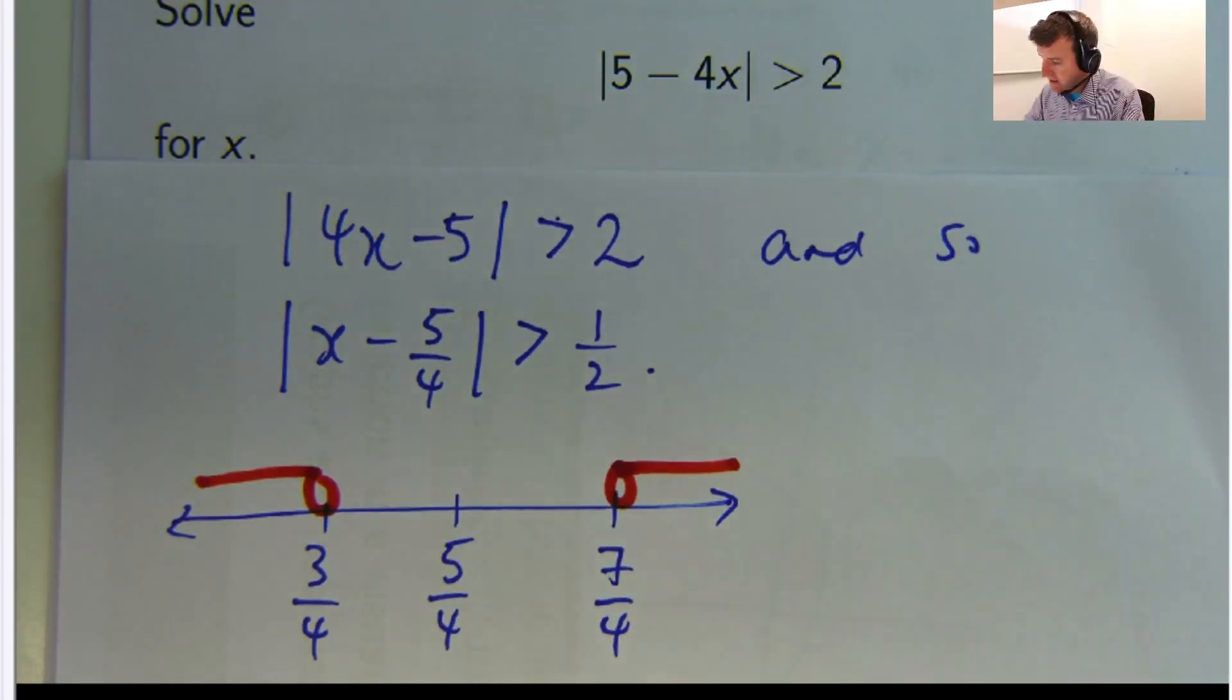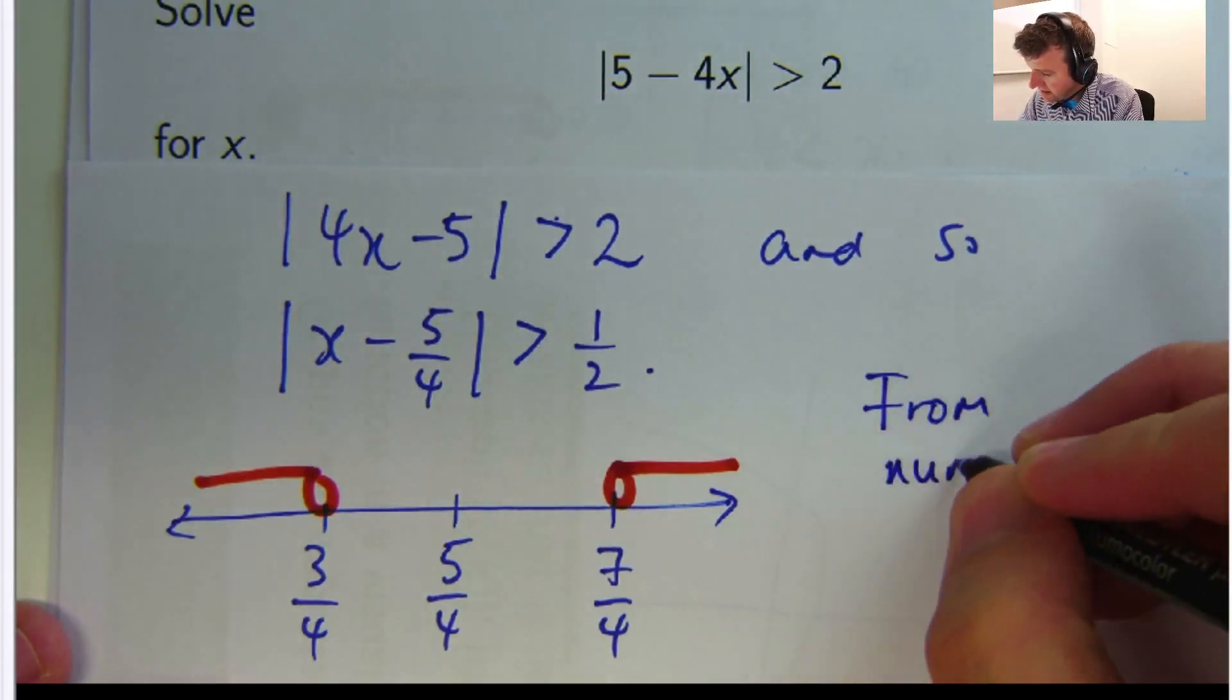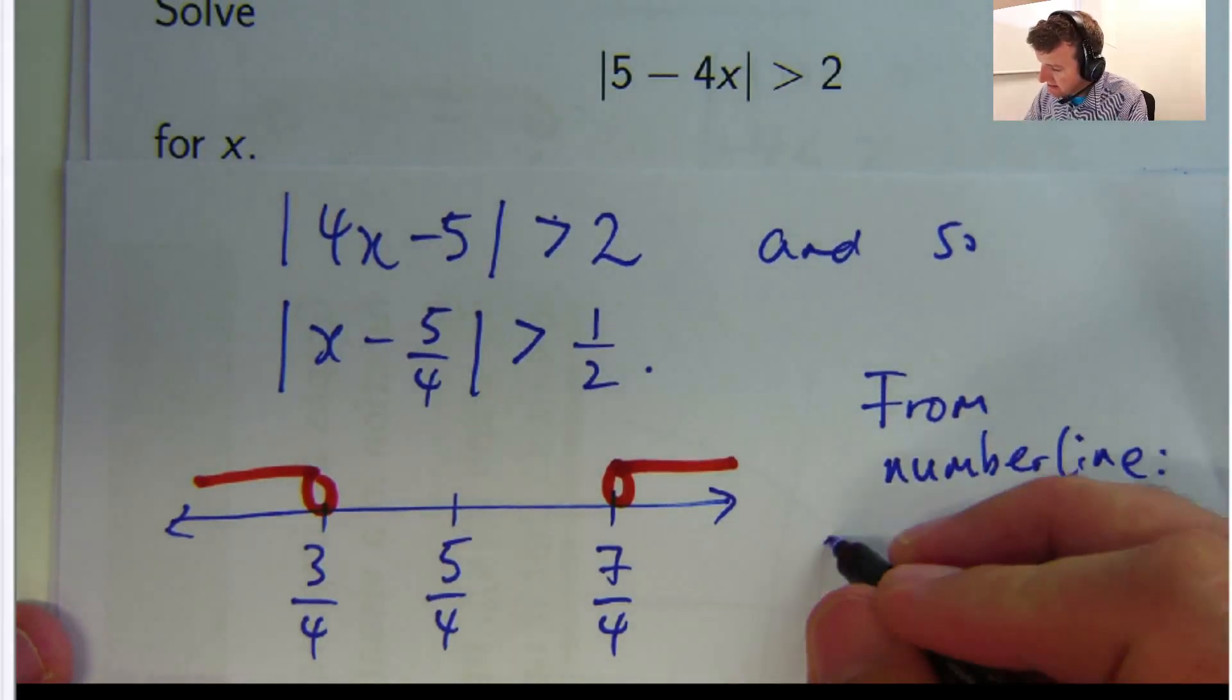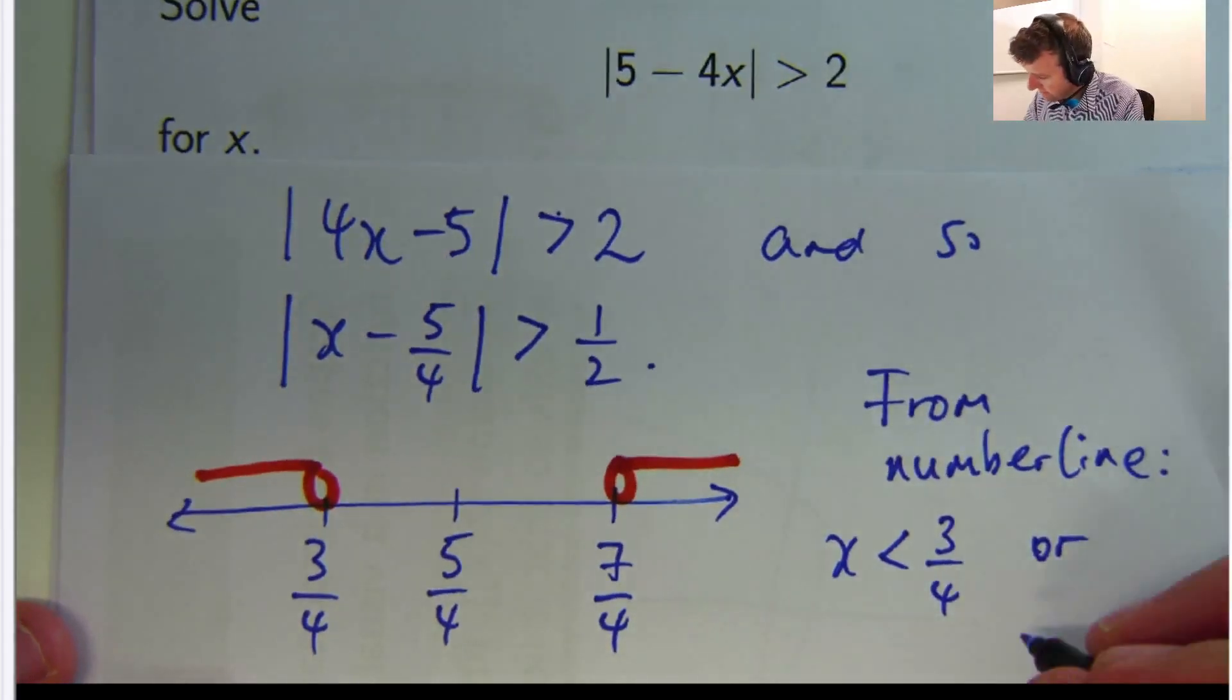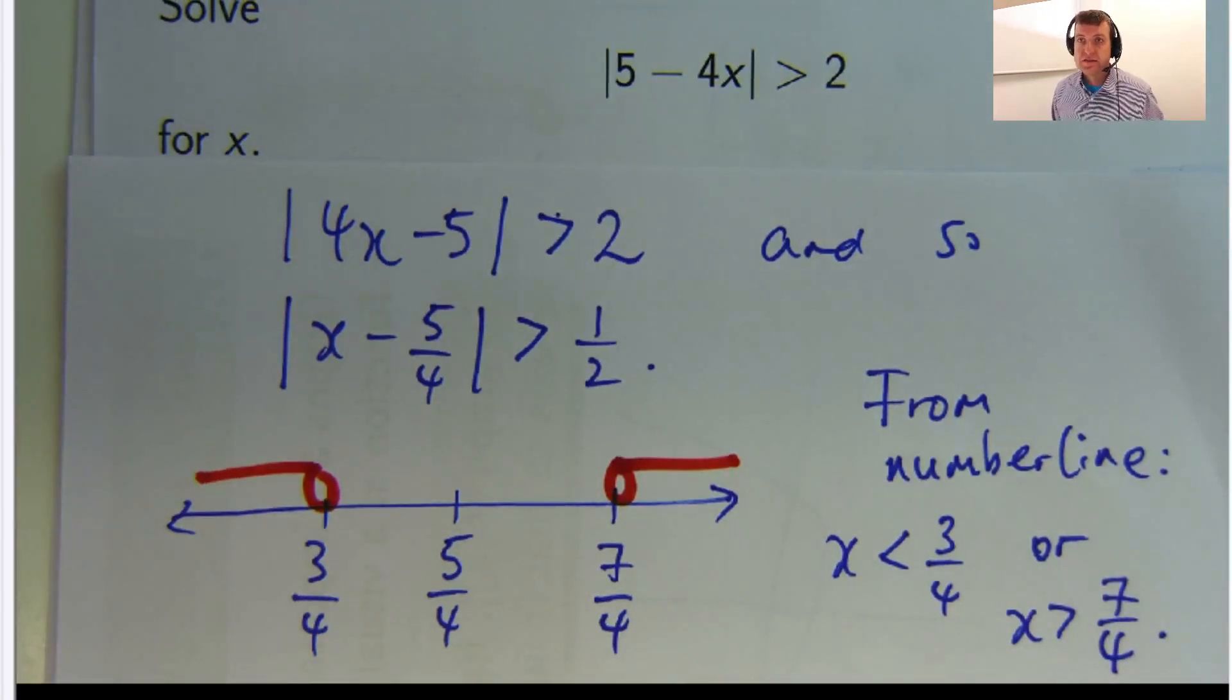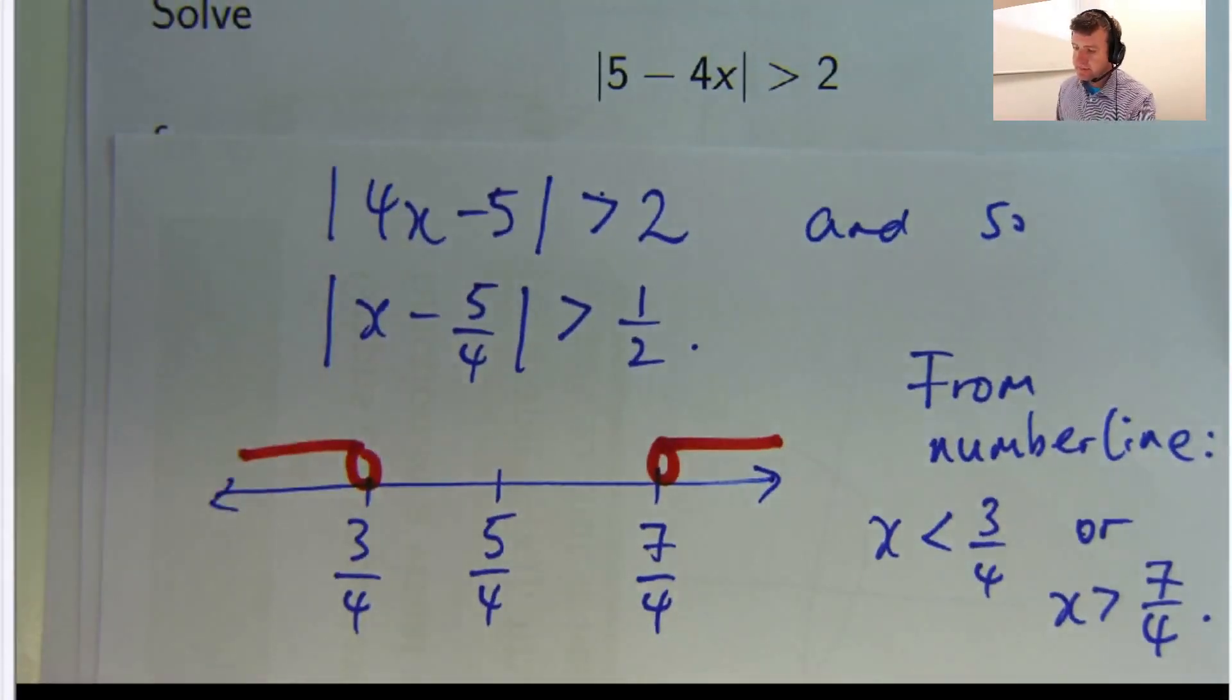Okay, so from the number line, x is less than 3 quarters or x is greater than 7 on 4. So that's the visual way of doing it. Okay,